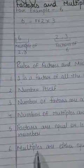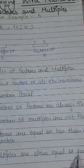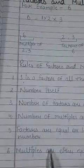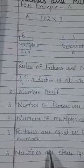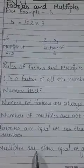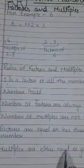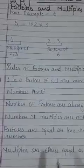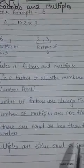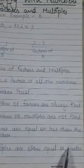The last rule is that multiples are either equal to or greater than the number. For example, we take the number 2. The multiples of number 2 will be 2, 4, 6, 8, 10, 12, 14, 16 and so on. That means when we are finding the multiples of any number, they are greater than or equal to the number.